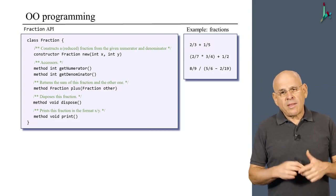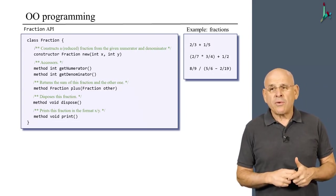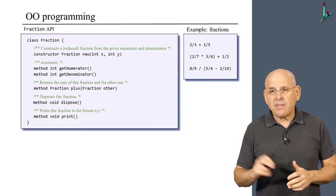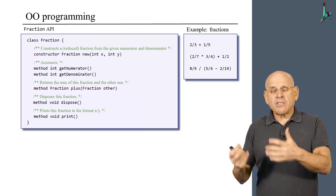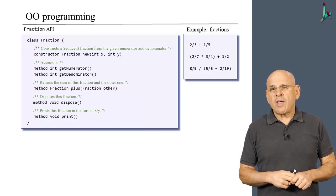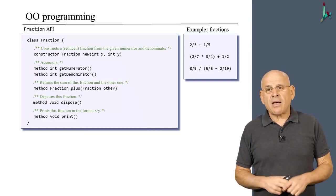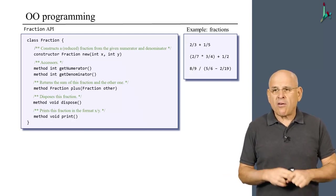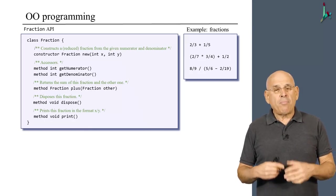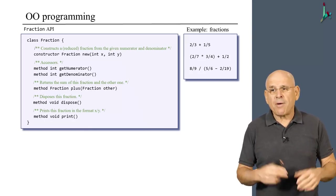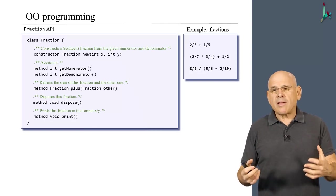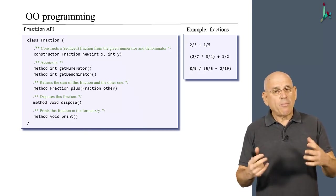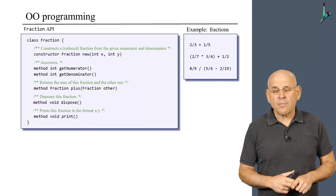What we see here is the skeleton of the class that represents fractions and provides a variety of fraction-oriented functionality. And what this API lets us do is, first of all, we can read the code. So we have a constructor that allows us to create new fractions. We have two accessors that give us access to the numerator and denominator of the current fraction. We have a plus method that enables us to add up fractions. We have a dispose method that gets rid of the memory resources that were allocated to this fraction. And we have a print method that prints the method on the screen.